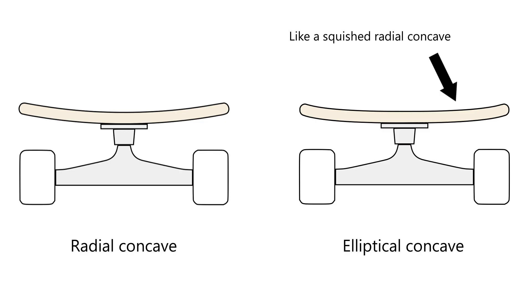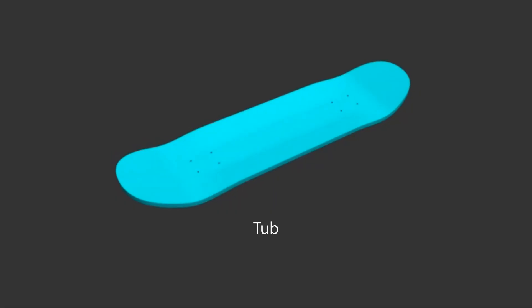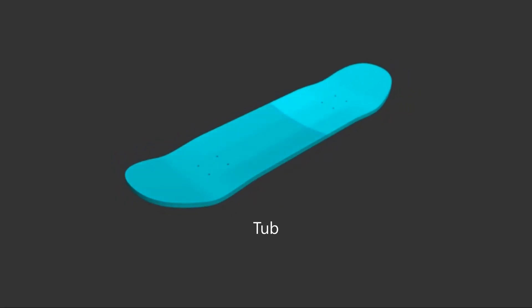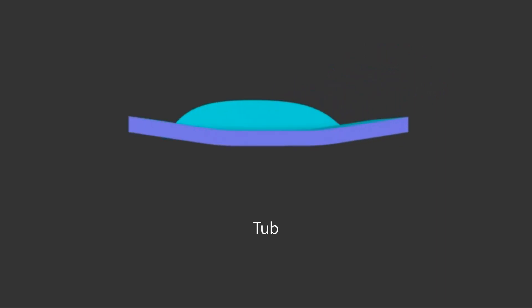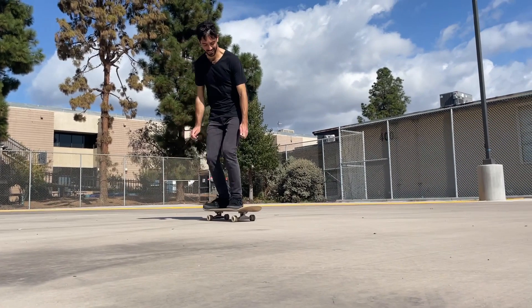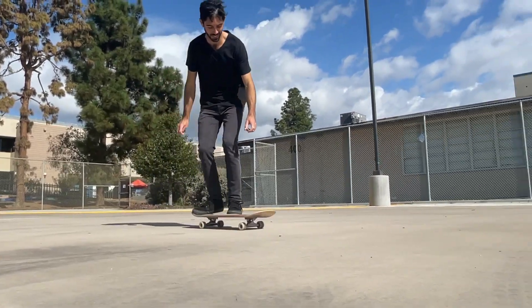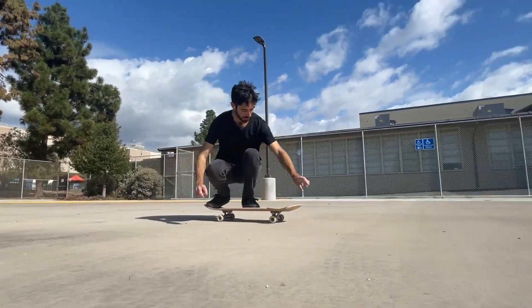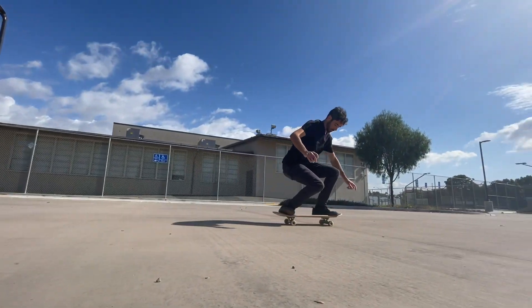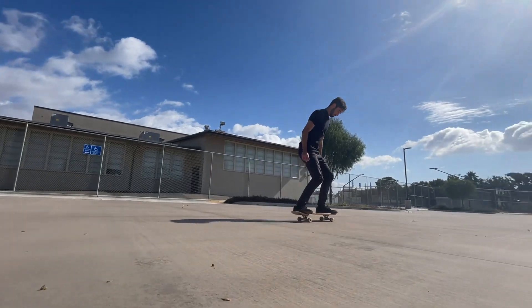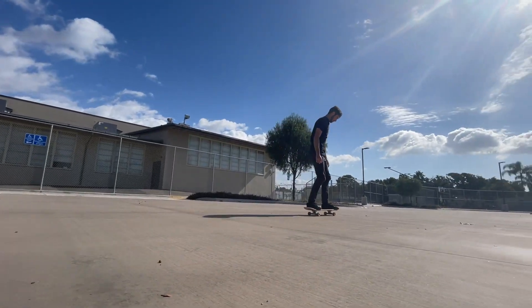Tub concave is sort of like radial, but it has a flat section in the middle that folds up on the sides. This type of concave can feel more distinctive, which may be better suited for boards where steeper concave is desired. Tub concave will help your foot feel a little more locked in than radial.